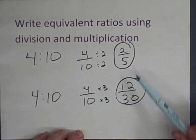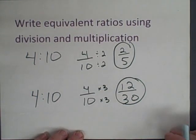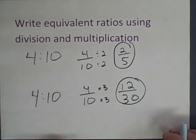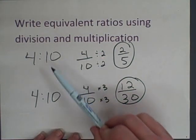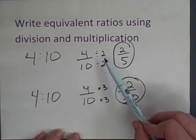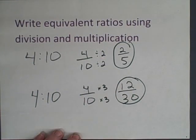This ratio is also equivalent to two fifths. So writing equivalent ratios is as simple as dividing both numbers by the same number such as two which is taking half of both numbers or we could multiply both numbers in the ratio by three which is basically tripling the ratio.